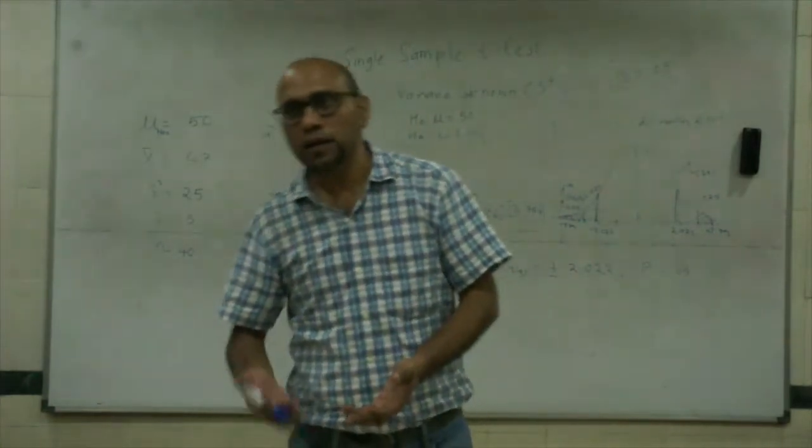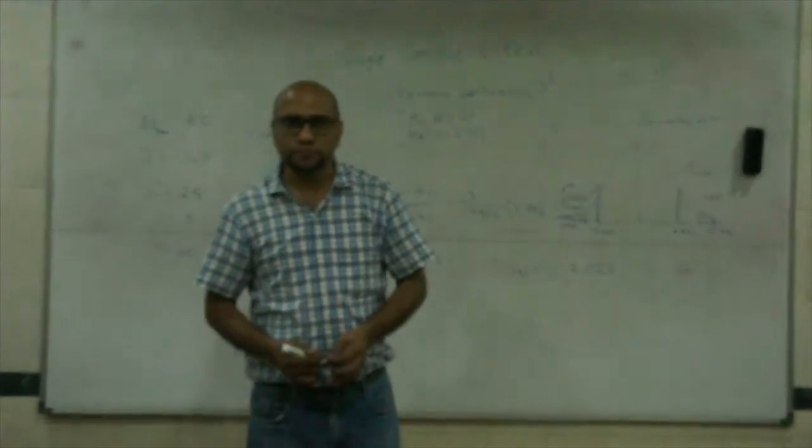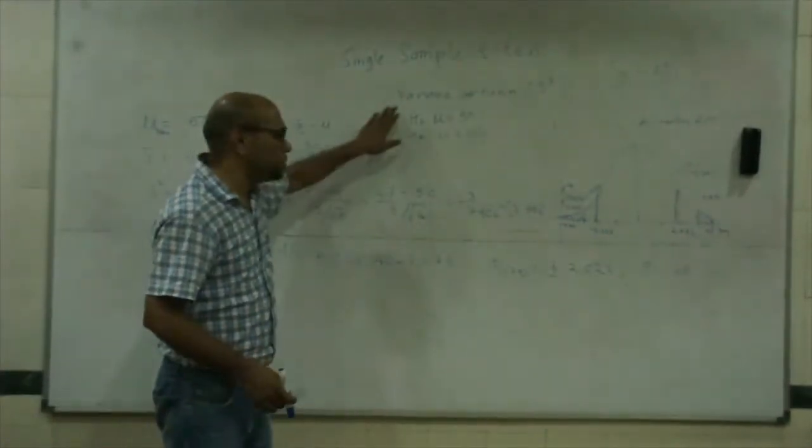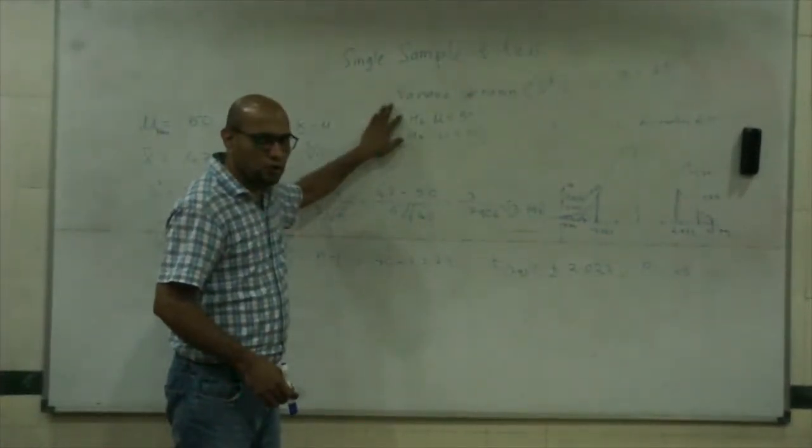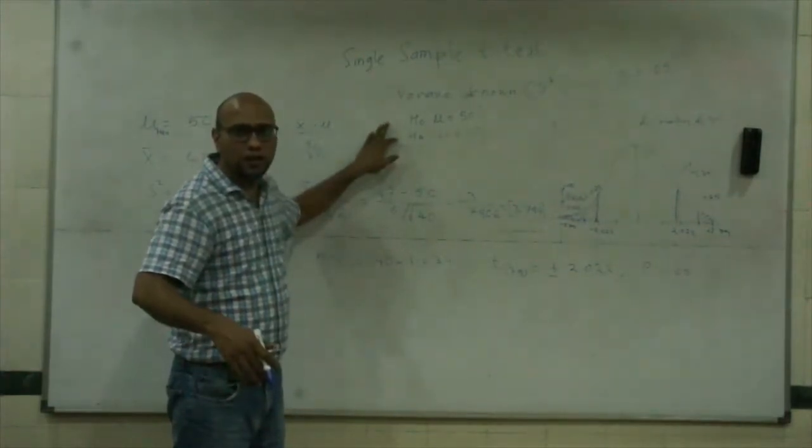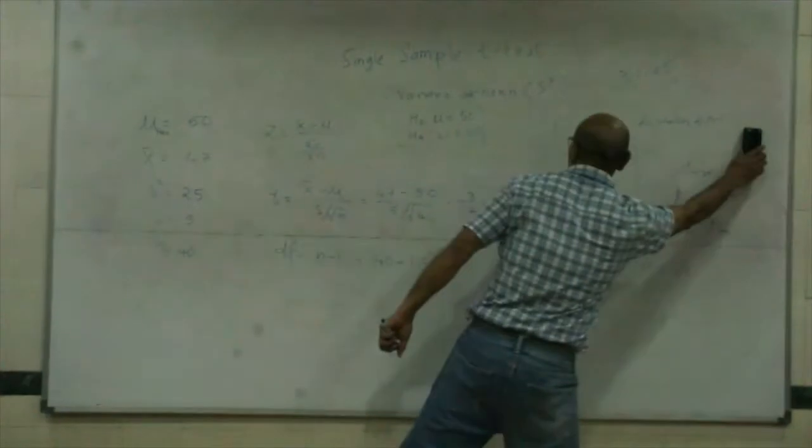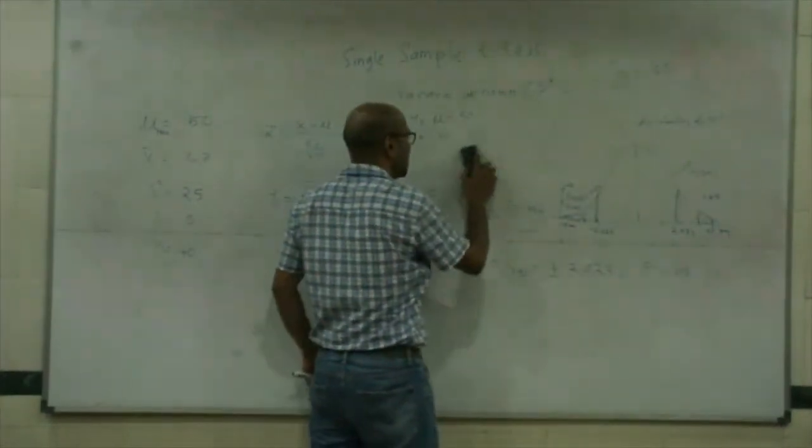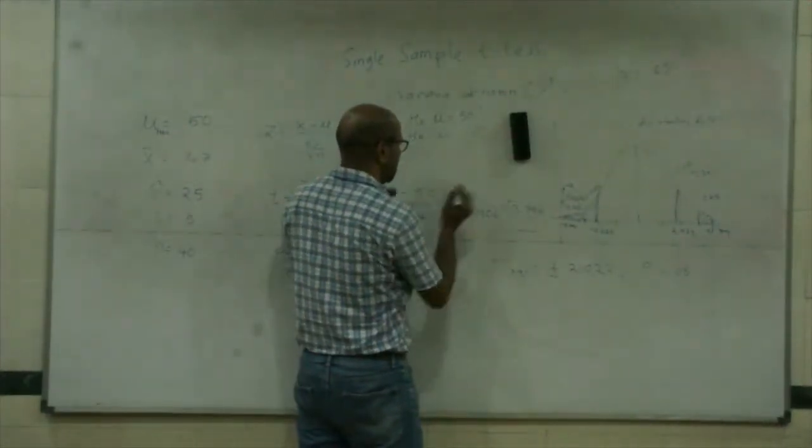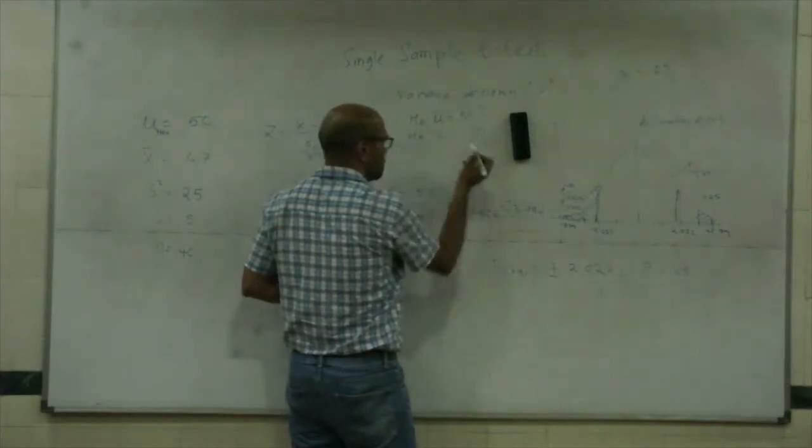For example, my theory says that the population mean is 50. The alternative says that the population mean is greater than 50. So not equal to 50, but the chance that I would get it is greater than 50.